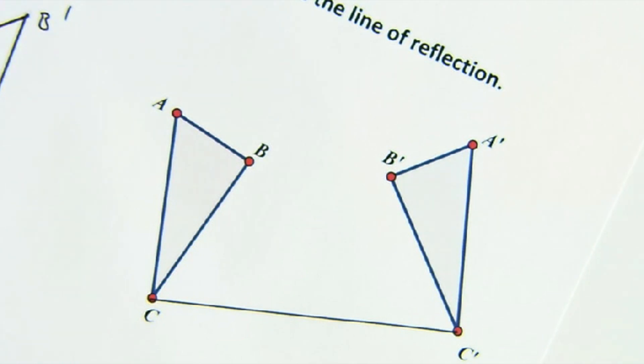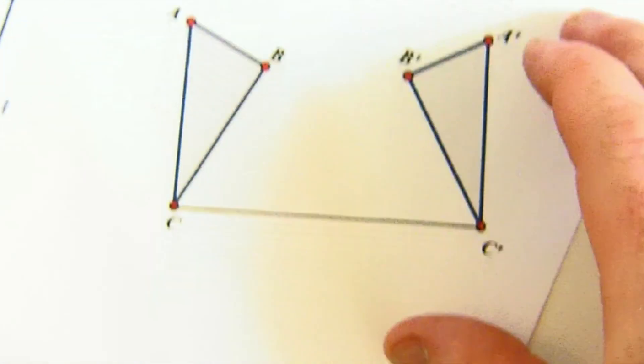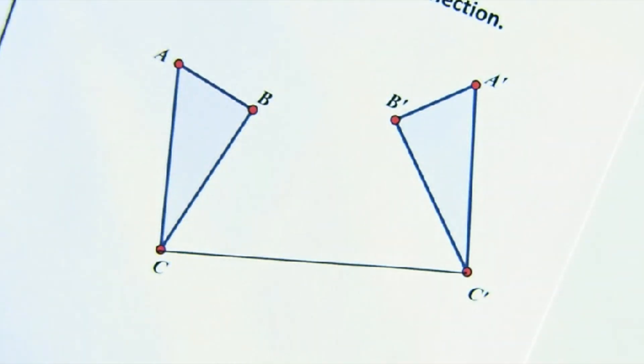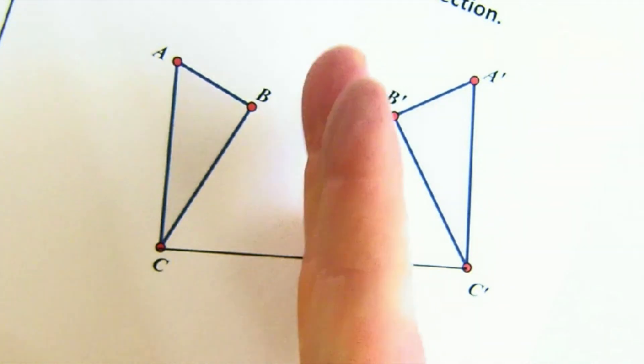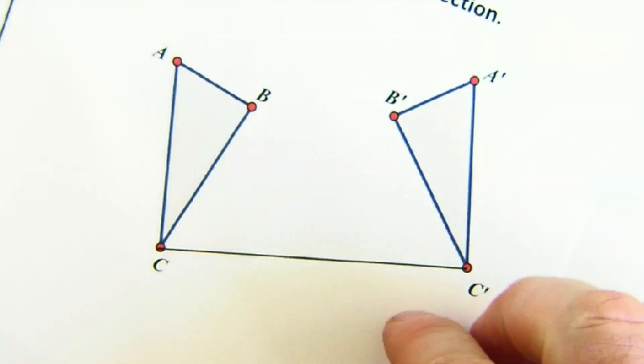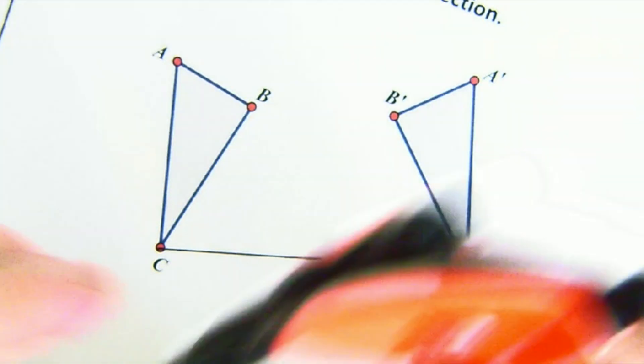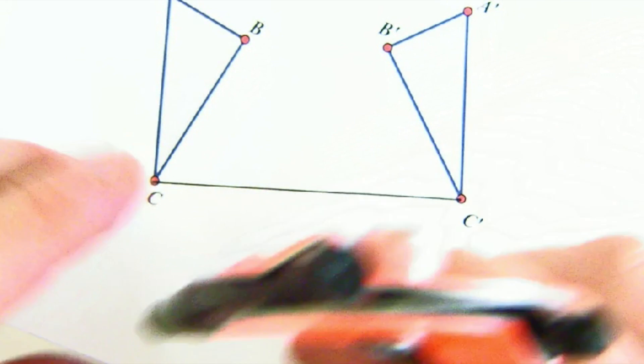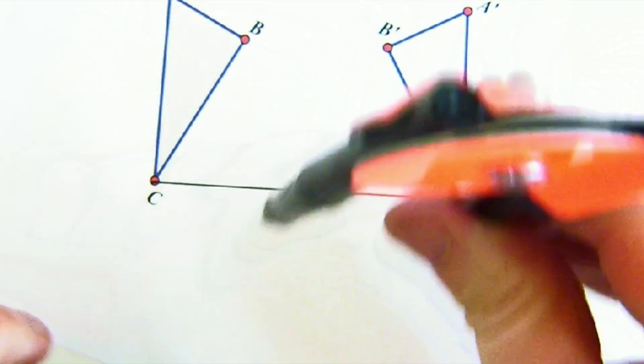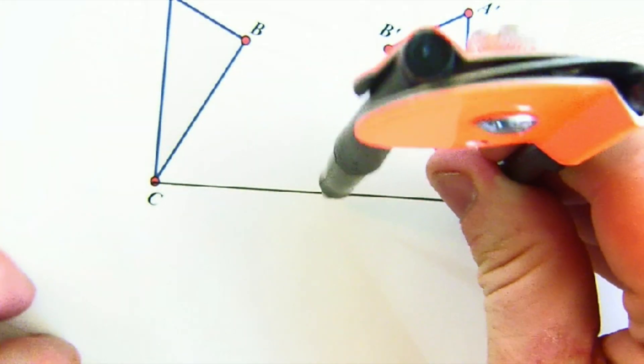So, I am just going to connect C and C prime, just because they are easy to do that. And I want to create a perpendicular line right through the middle. We know how to do that. It is a nice review of a midpoint construction. So, I am going to pull out my compass.